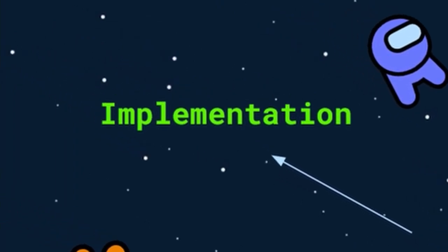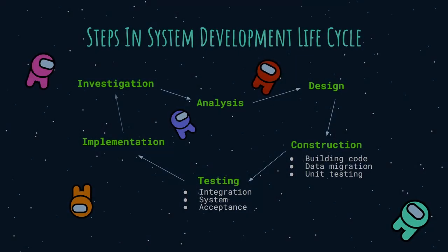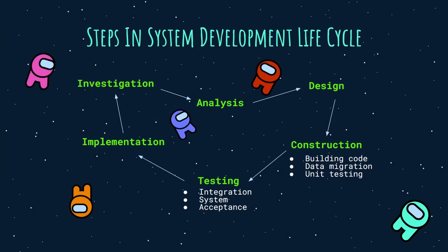For the last phase, implementation begins after the system is confirmed to run properly after adequate testing. It will be released to the public as a beta version for users to test and give feedback on any issues or bugs. The development team will fix these, and the cycle will repeat until all requirements and organization goals have been fulfilled.